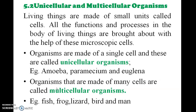Living things are made up of small units called cells, which are microscopic. Unicellular organisms are made of a single cell, while multicellular organisms are made of many cells. Human beings and animals are multicellular.